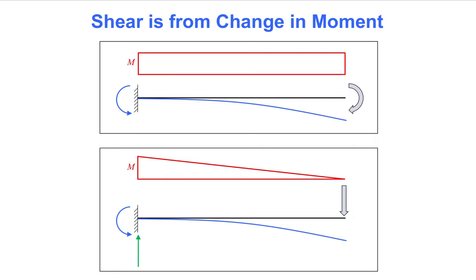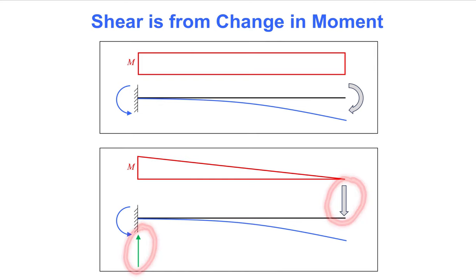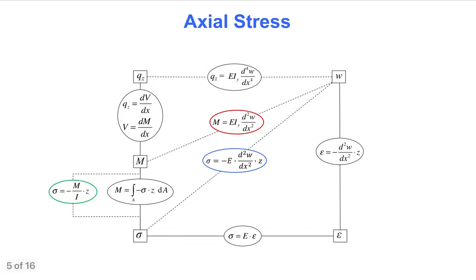The beam case below has a point force applied at the right-hand side, resulting in the linearly varying bending moment diagram shown here. We see that a vertical shear force is needed on the left-hand side for the beam to be in equilibrium. Equilibrium will soon tell us that it is the change in the bending moment along the beam that is associated with this shear force. We will also see that it is the change in axial stress that leads us to determine the shear stress.